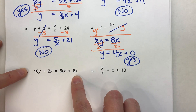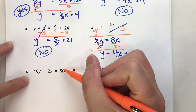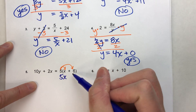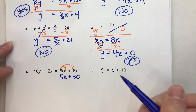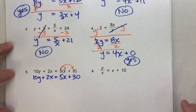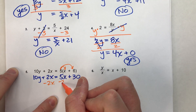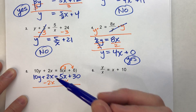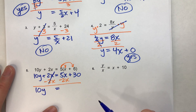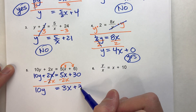Example five is a little more complicated: 10y plus 2x equals 5 times (x plus 6). First I'll use the distributive property: 5 times x is 5x, plus 5 times 6 is 30. Then to get y by itself, I subtract 2x from both sides. The 2x's undo each other, leaving 10y equals 5x minus 2x plus 30, which simplifies to 10y equals 3x plus 30.